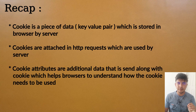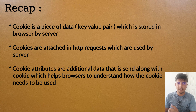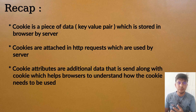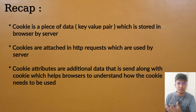A cookie is a piece of data that is sent from the server to the client and stored in the client browser. Each cookie, along with the key-value pair, contains some additional information known as cookie attributes. Cookie attributes help a browser decide how the cookie should be used based on the server's preferences.